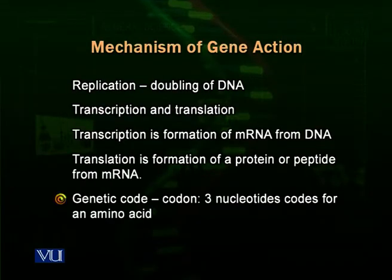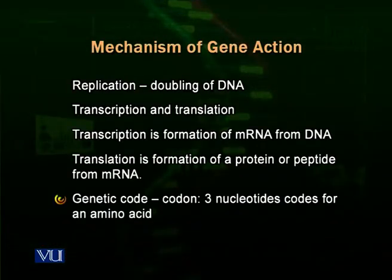There is another related term called genetic code or codon. Three nucleotides in the DNA code for an amino acid. As we know, proteins consist of amino acids — amino acids are the basic units of proteins and join together to make a protein. Three nucleotides combined together code for an amino acid. We call this a genetic code or codon. A codon is a triplet code that instructs the attachment of an amino acid to a peptide chain.